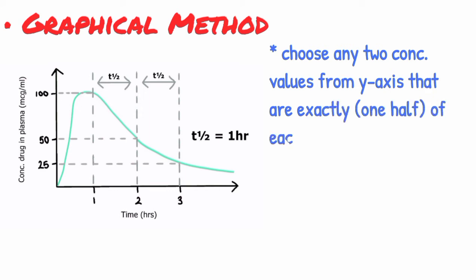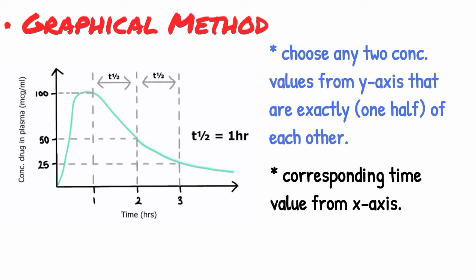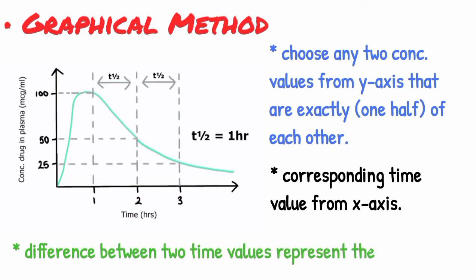To determine the half-life of a drug, you have to choose any two concentration values from y-axis that are exactly one half of each other and corresponding time values from x-axis as shown in the graph. The difference between two time values represents the elimination half-life of that particular drug.